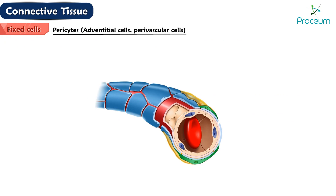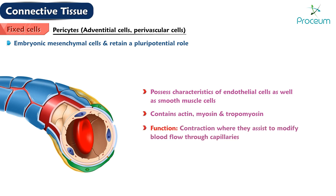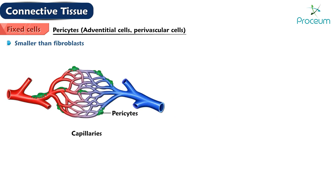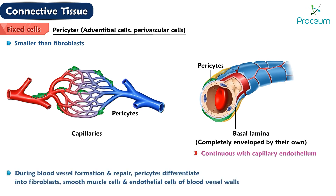Pericytes, also known as adventitial cells or perivascular cells, are derived from embryonic mesenchymal cells and may retain a pluripotential role. They possess characteristics of endothelial cells as well as smooth muscle cells because they contain actin, myosin, and tropomyosin, suggesting they may function in contraction to assist in modifying blood flow through capillaries. They are smaller than fibroblasts, located mostly along capillaries, and are completely enveloped by their own basal lamina, which is continuous with the basal lamina of the capillary endothelium. During blood vessel formation and repair, they may differentiate into fibroblasts, smooth muscle cells, as well as endothelial cells of blood vessel walls.